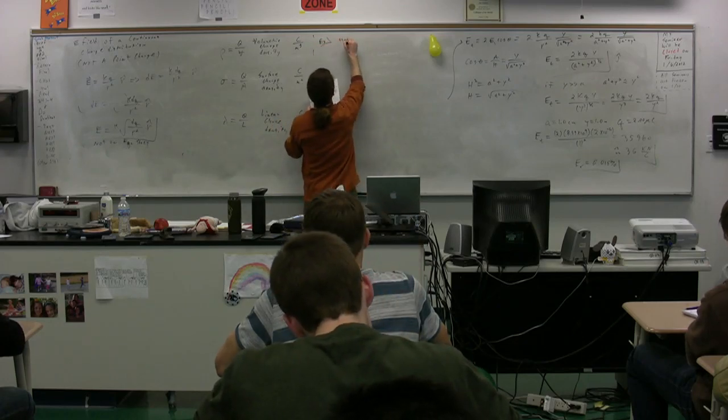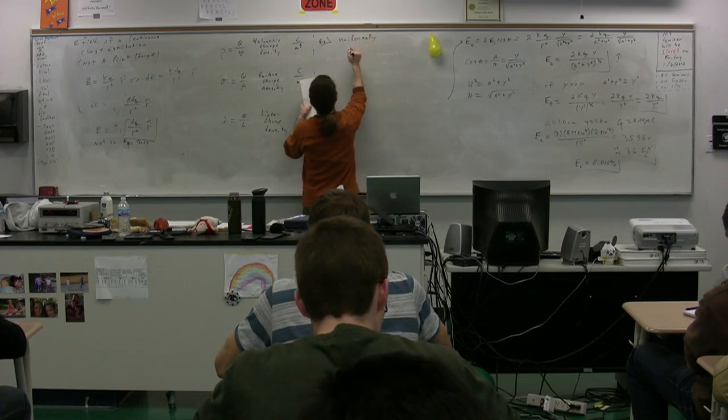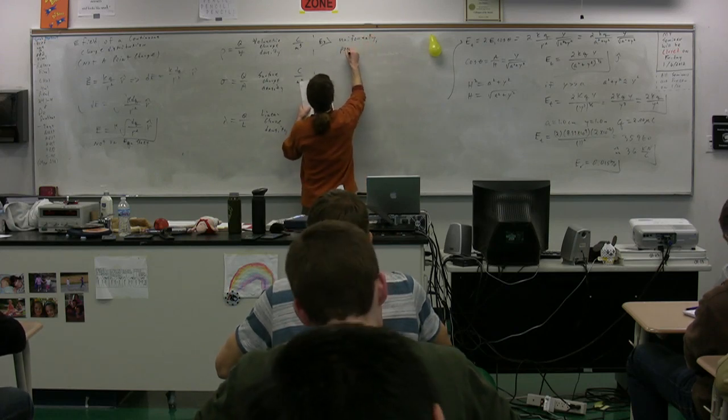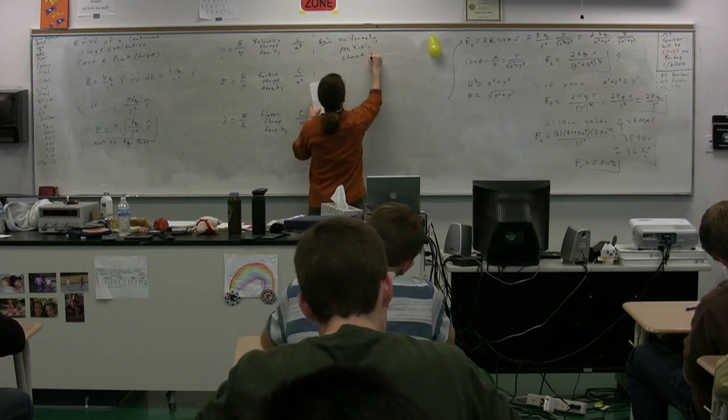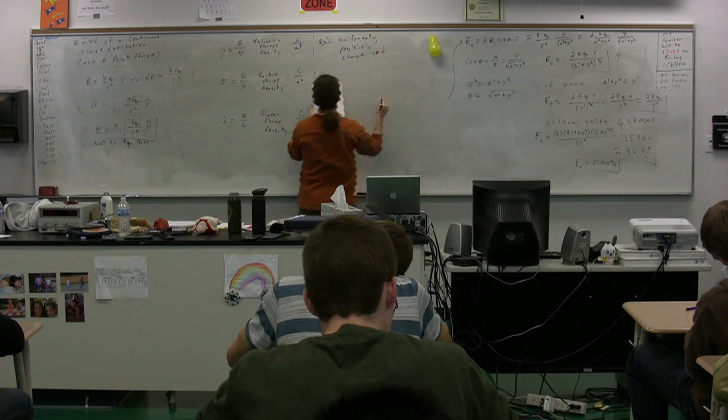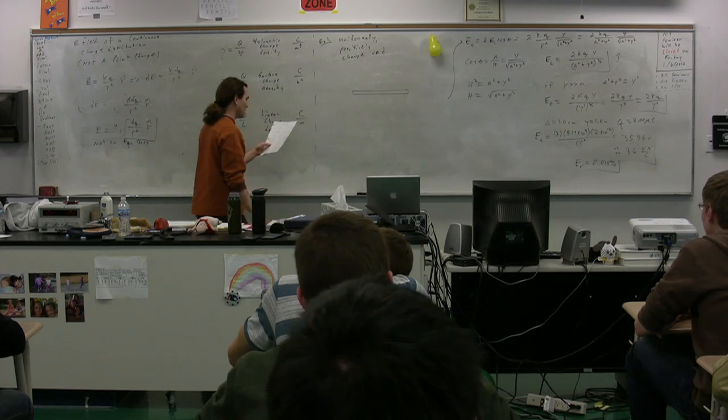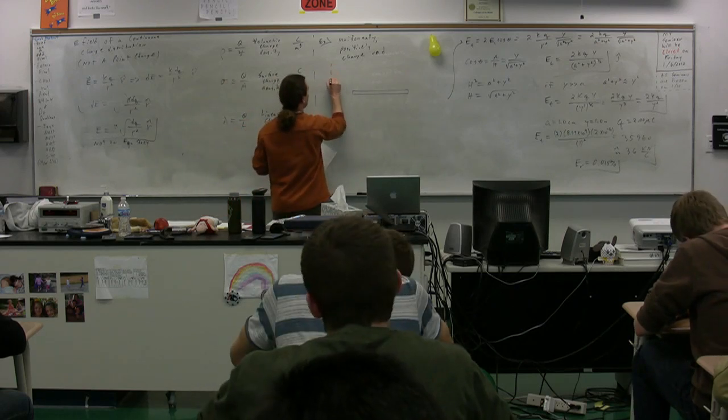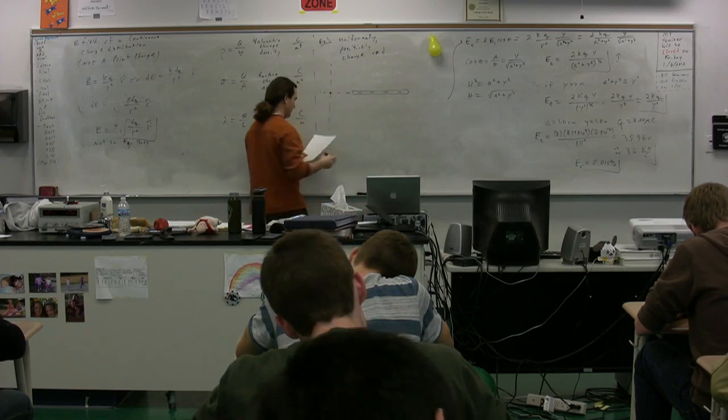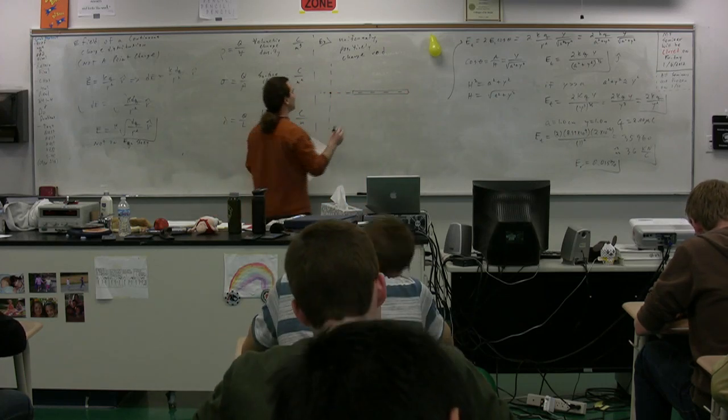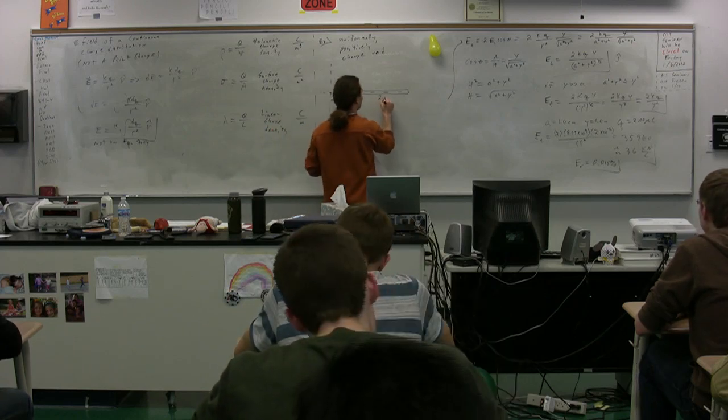We're going to have a uniformly, positively charged rod. We have a rod with a uniform positive charge, and what we're going to do is figure out the electric field that exists at this point right here. This point right here is a distance a from the rod, which has a length l.